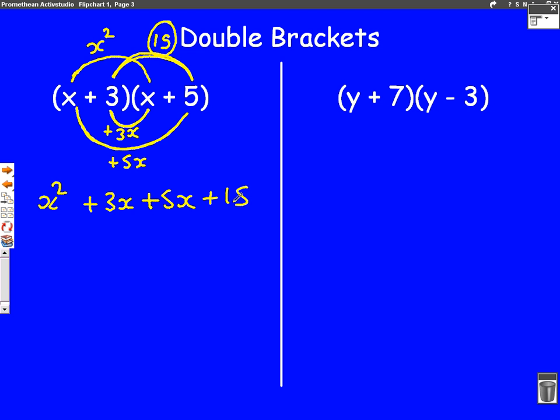We always get one mark for that. And then we get our second mark for simplifying it. So we always have an x squared first, but we can simplify the middle two. Because we have 3x, and we add on 5x, then we'll have 8x. And at the end, we have our plus 15. And that would be our second mark.